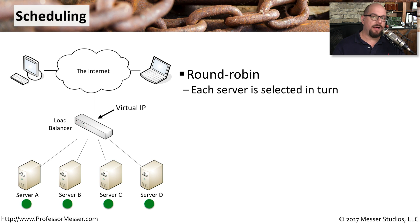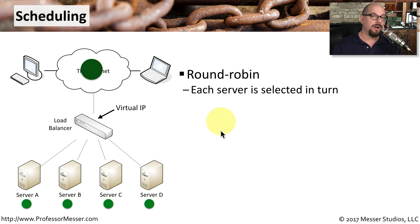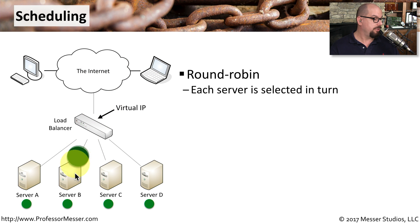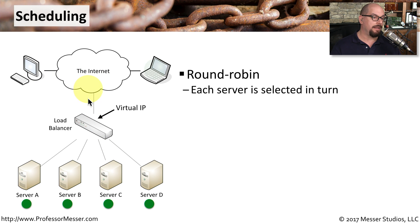You have a lot of different options on how traffic is scheduled to go to different servers behind a load balancer. One type of scheduling is called round robin scheduling, where each server is selected in turn. If round robin scheduling is set for a one-to-one, then the first bit of traffic will go to server A, the second bit of traffic will be scheduled to server B, the third to server C, and the last bit will go to server D.